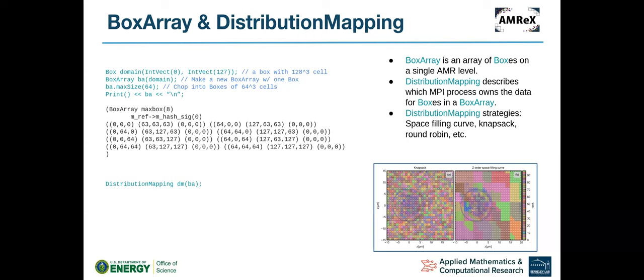Here I show two common strategies. The one on the left is what we call a knapsack — it tries to make the workload as balanced as possible, but the disadvantage is you lose locality. The one on the right is based on a space-filling curve. You can see that processor 0's boxes are adjacent to each other, which saves communication costs.